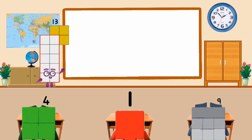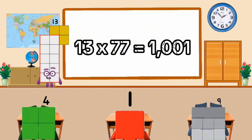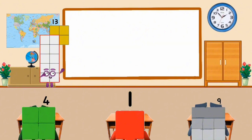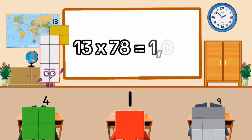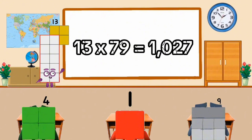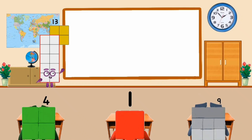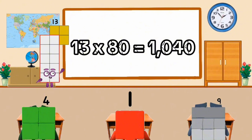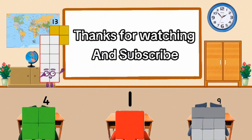13 times 77 equal 1001. 13 times 78 equal 1040. 13 times 79 equal 1027. 13 times 80 equal 1040.